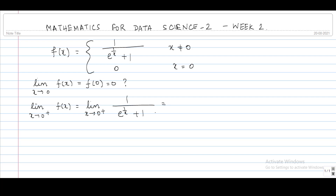Let us calculate this limit. As x tends to 0+, 1/x tends to infinity. So e^(1/x) will again tend to infinity, and e^(1/x) + 1 will tend to infinity. Therefore 1 / (e^(1/x) + 1) will tend to 0. So the right hand limit is equal to 0.